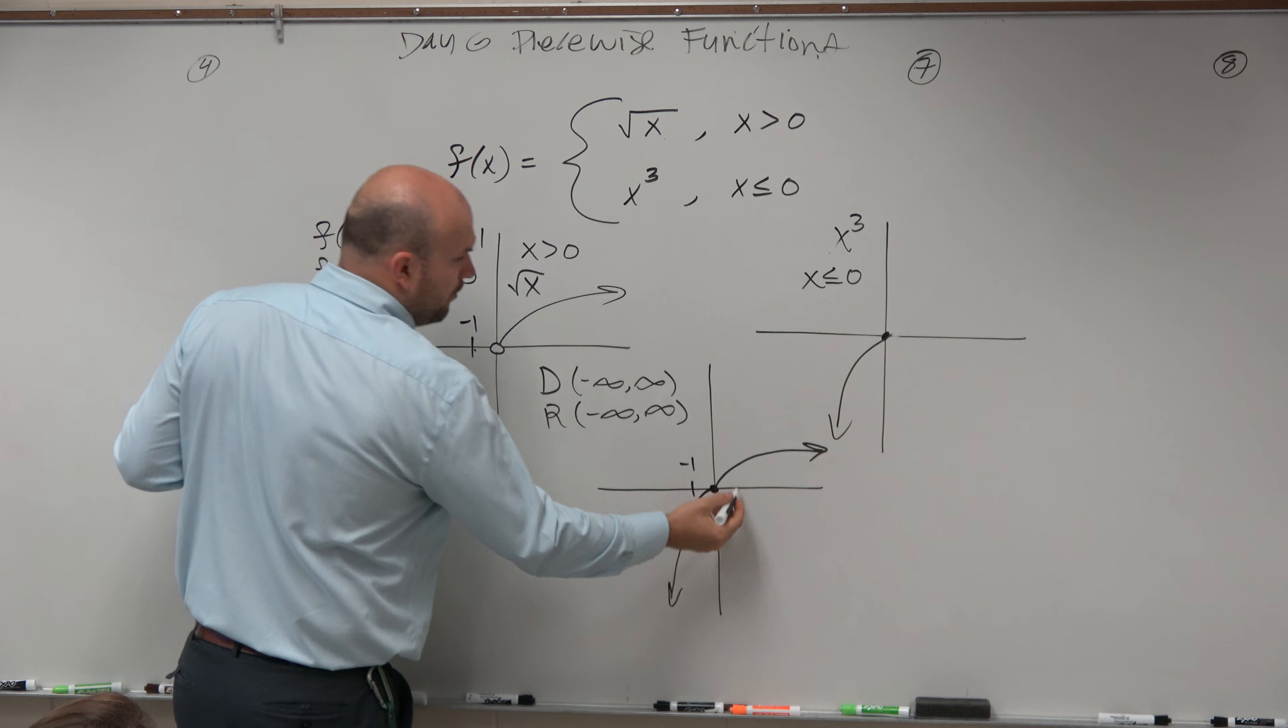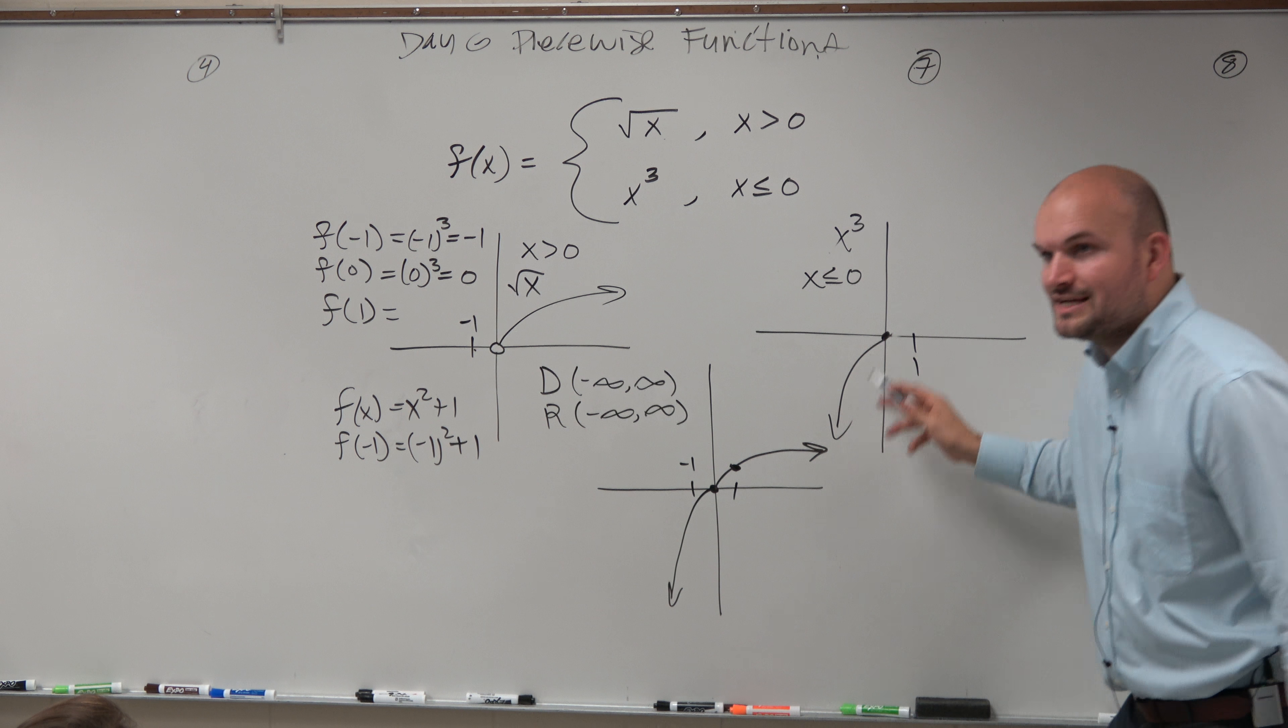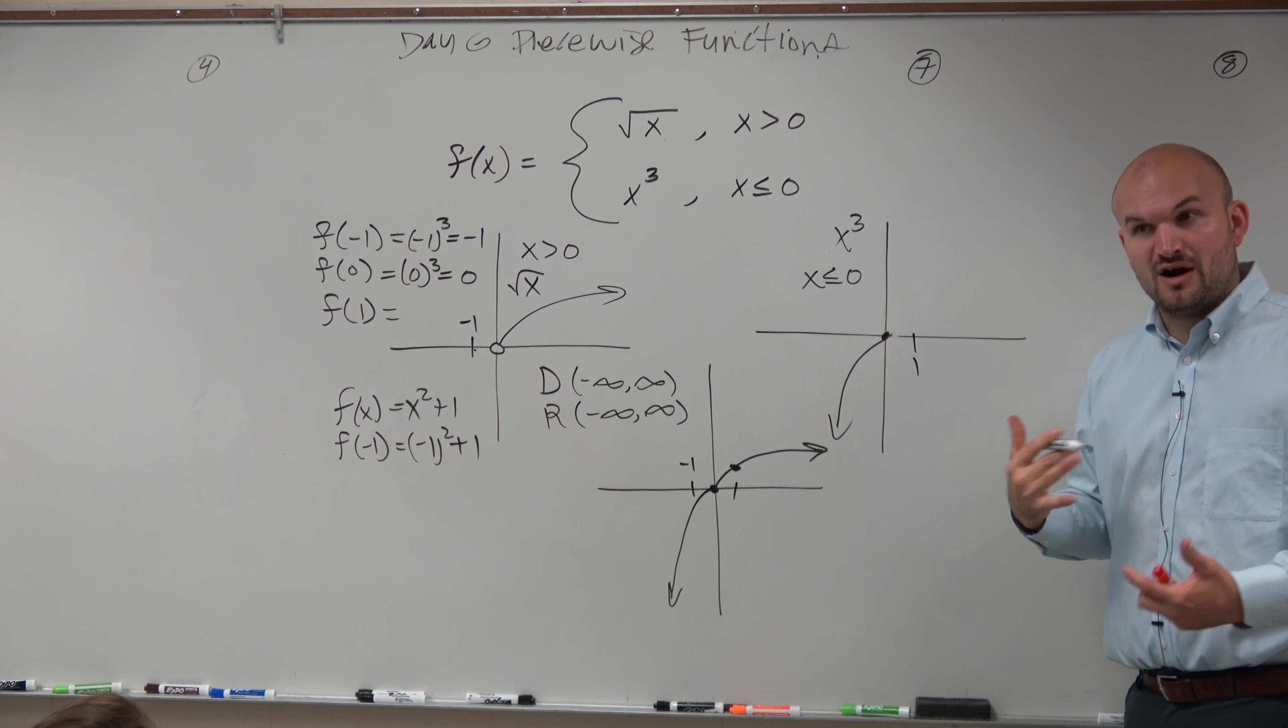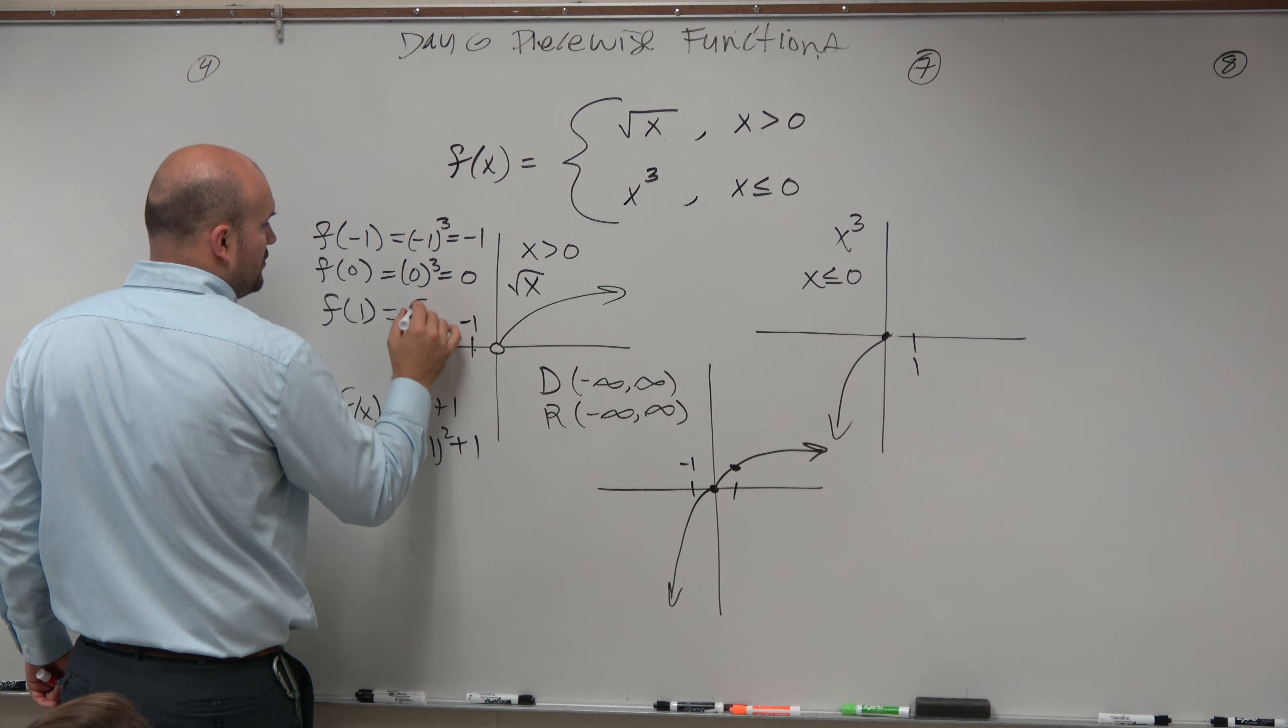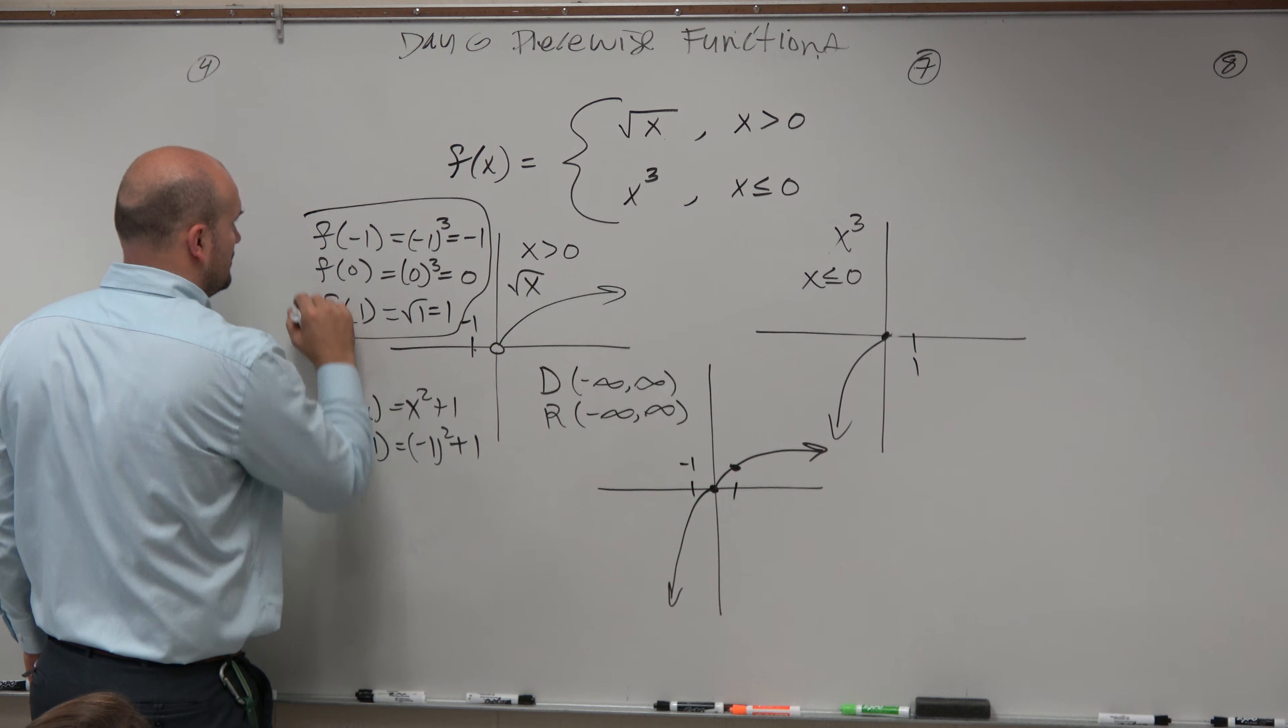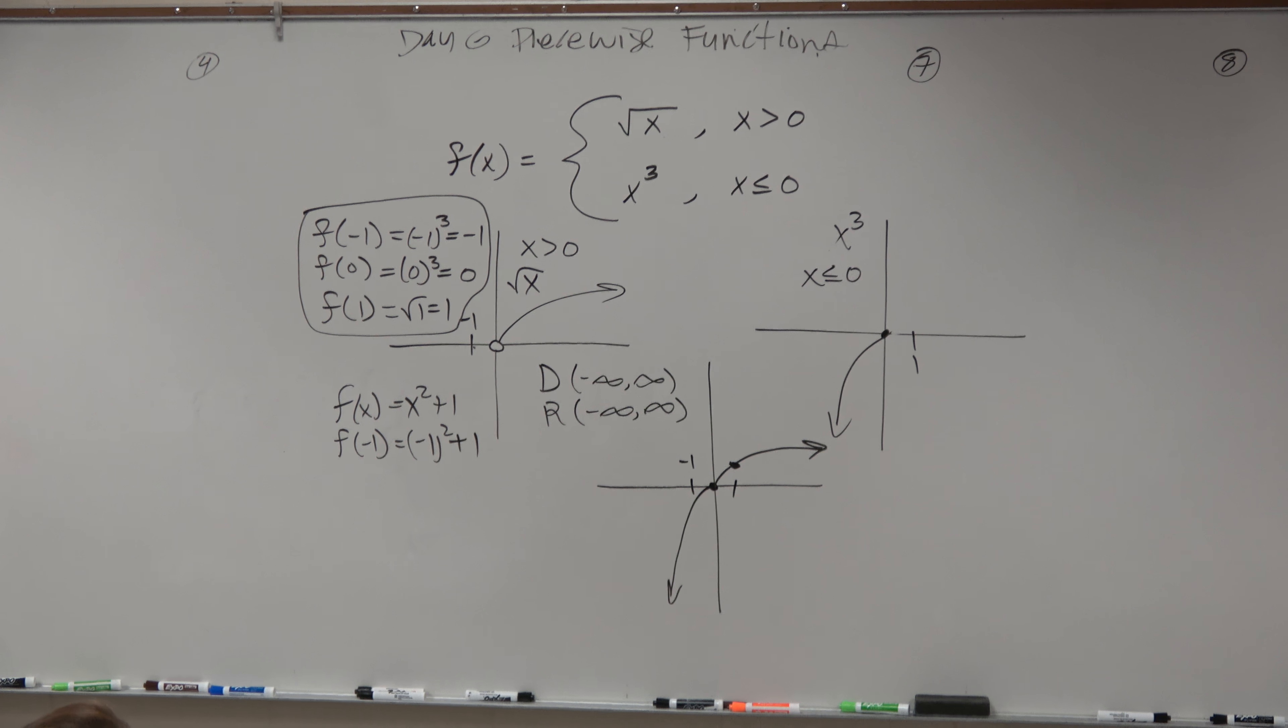And then last but not least, when we're dealing with 1, we're not dealing with x cubed anymore, right? There is no point on the x cubed graph at 1. We erased that portion. So when we want to evaluate for f of 1, we need to plug it into the first one. So the square root of 1 equals 1. OK? All right.